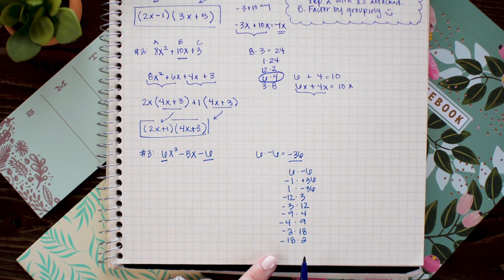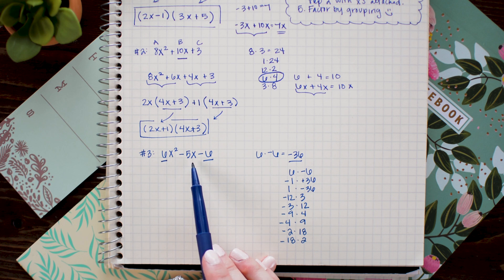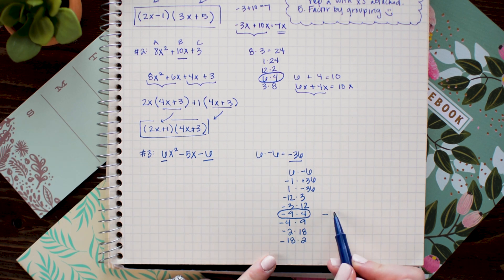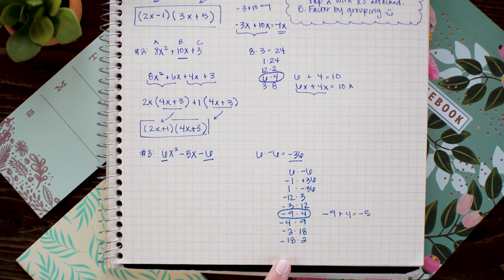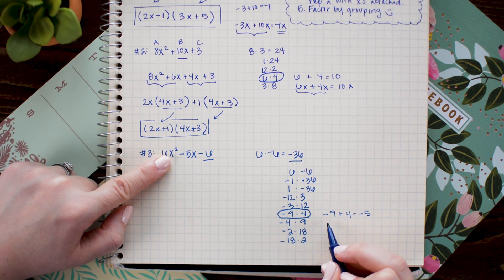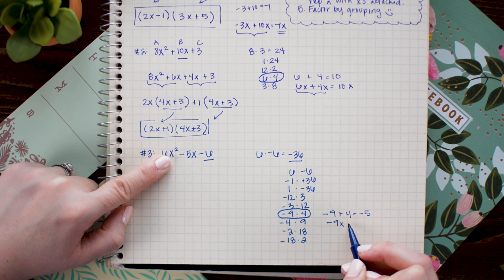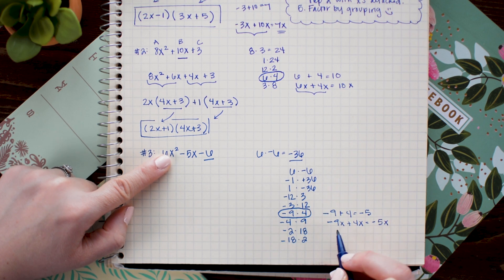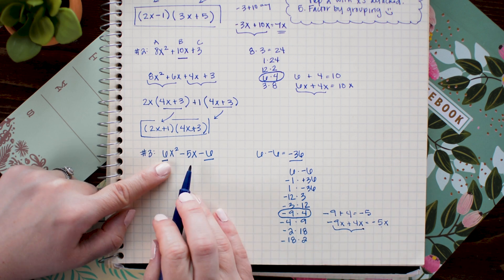Once I have all the factors listed I can go ahead and look for the pair that combines to B. So negative 5 is what I'm looking for. As I scan my list here I see that negative 9 times 4 adds to negative 5. Of course we will be substituting negative 5x out with this pair here. So negative 9x plus 4x equals negative 5x. So this will be the substitution for negative 5x in my equation.